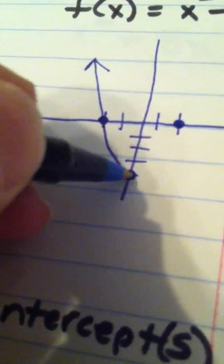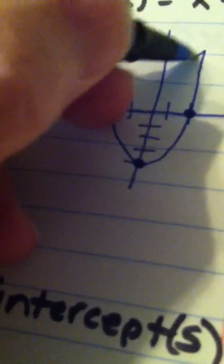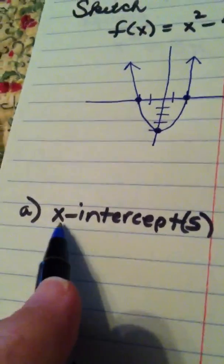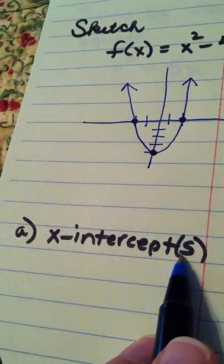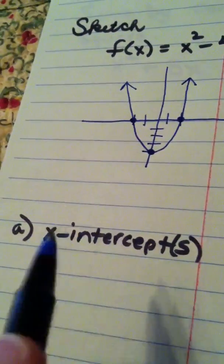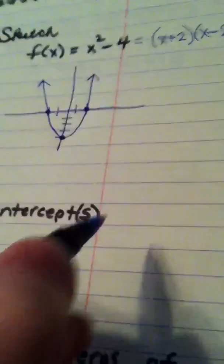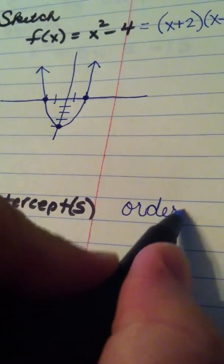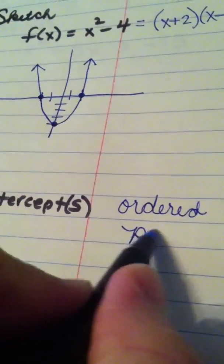And, of course, I know this is a parabola. So, that's my picture. Now, when I ask you to write the x-intercepts of a graph, I want to know the ordered pairs. And it's very important that you understand x-intercepts are always to be written as ordered pairs.